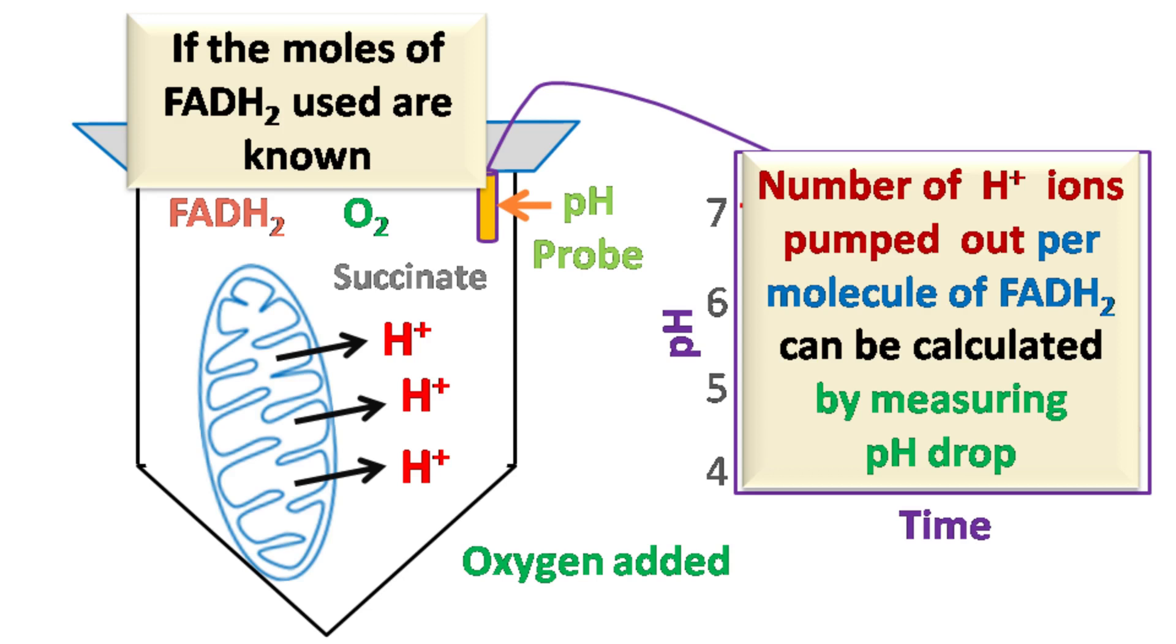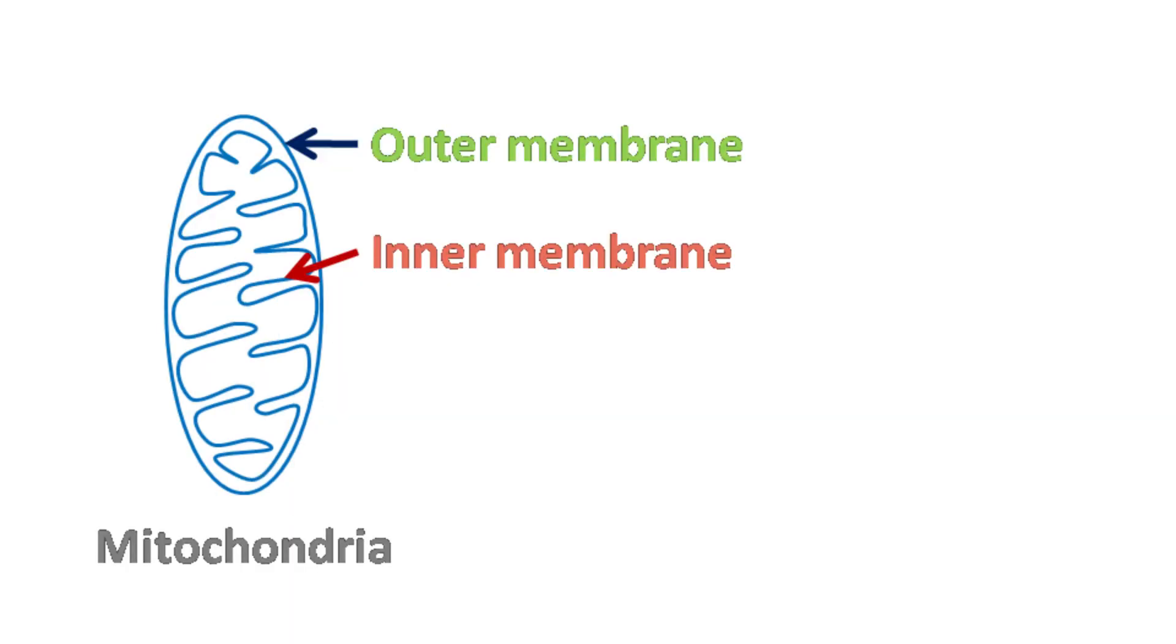The same experiment can be repeated with FADH2 to see how many H+ ions are pumped out per molecule of FADH2. It turns out that for each molecule of NADH, about 10 H+ ions are transferred across the mitochondrial membrane, and for each molecule of FADH2, about 6 H+ ions are transferred across the membrane.